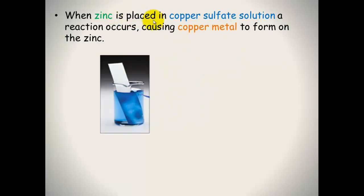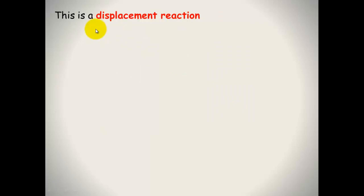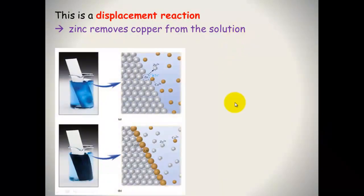When zinc is placed in copper sulphate solution a reaction occurs, causing copper metal to form on the zinc — we've done that in class. So you put a piece of zinc in some copper sulphate and what happens is you get a coating of copper metal on the outside of the zinc. This is called a displacement reaction because zinc is removing copper from the solution.